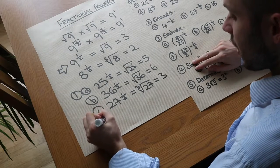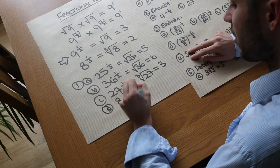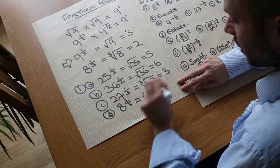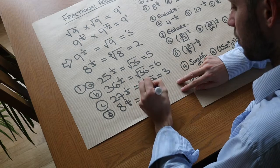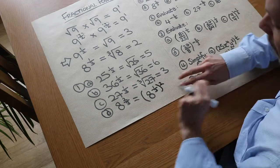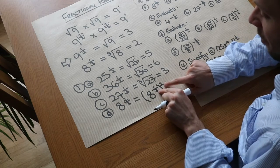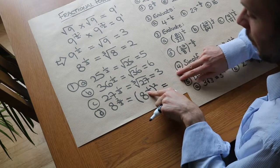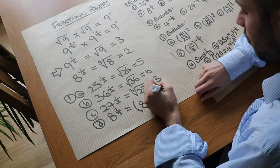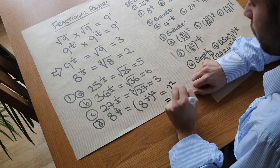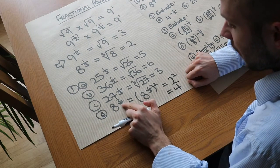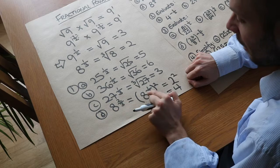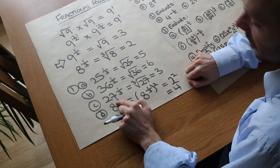Now for 8 to the power of 2 thirds, which is harder because there's a number in the numerator of the fractional power. We can write this as 8 to the power of a third, all squared — because a power to a power means we multiply: a third times 2 is 2 thirds. So we first do the cube root of 8, which is 2, and then square it to get 4. The denominator of the fractional power gives the root, and the numerator gives the remaining power.